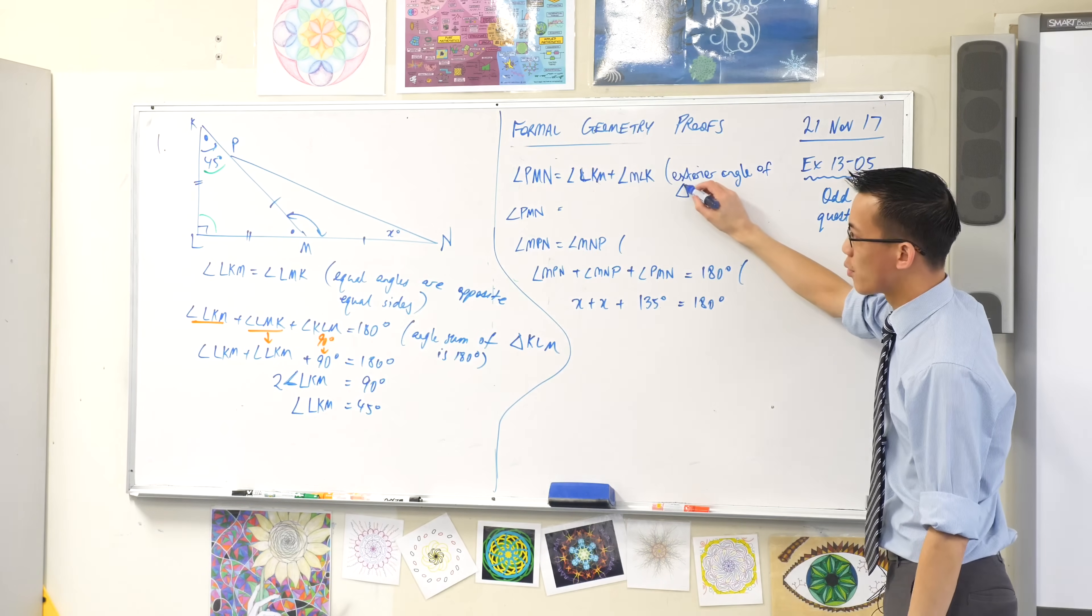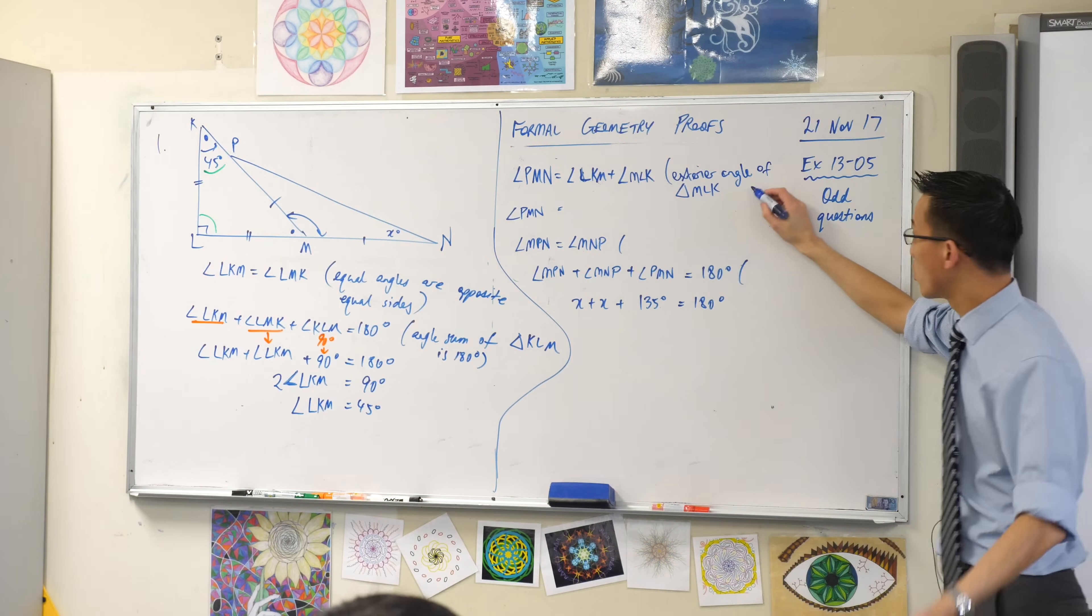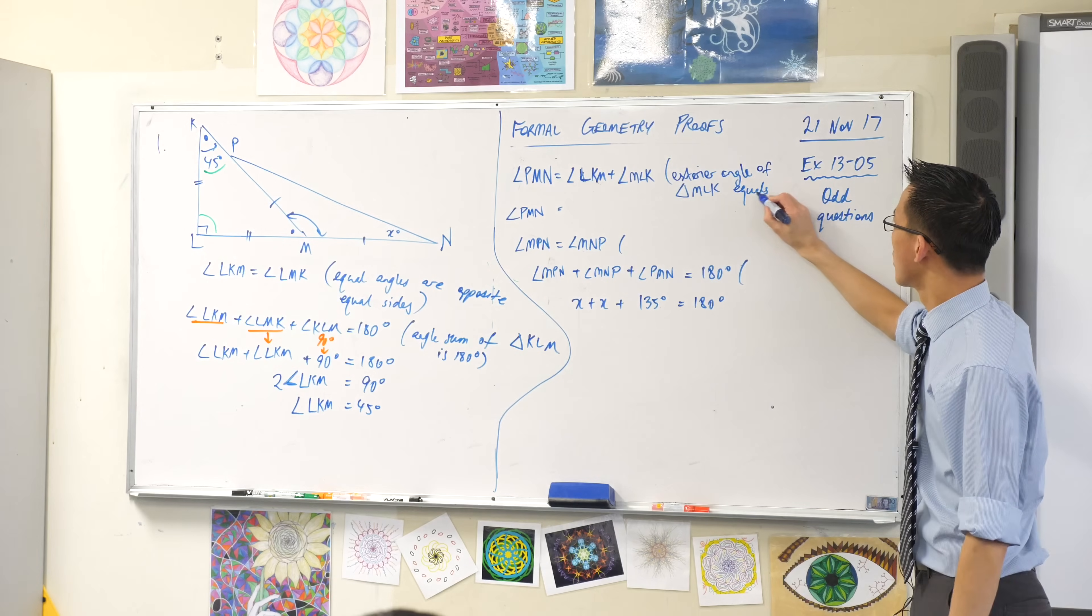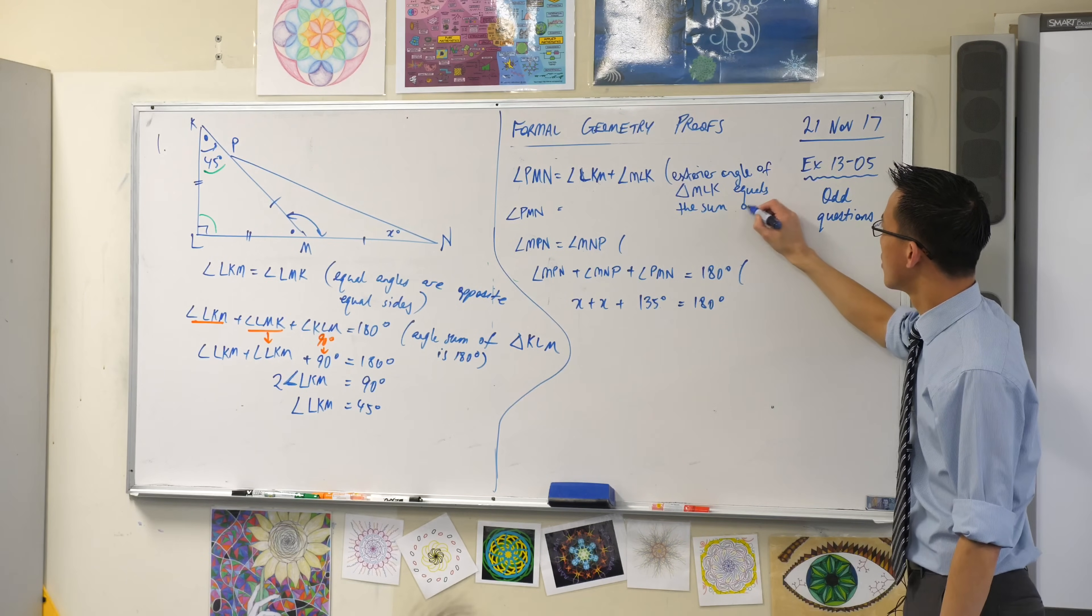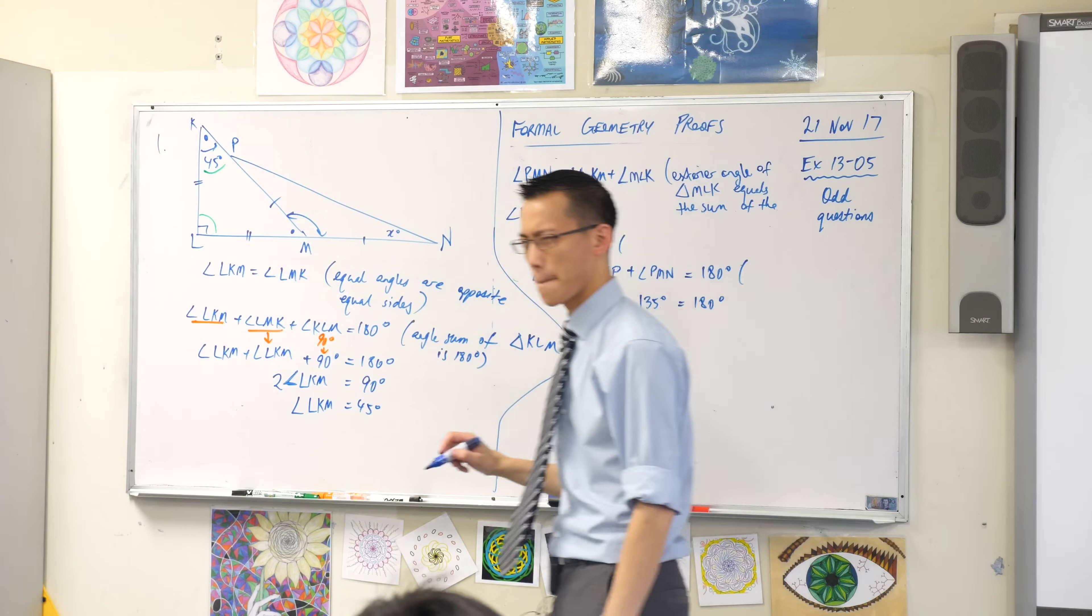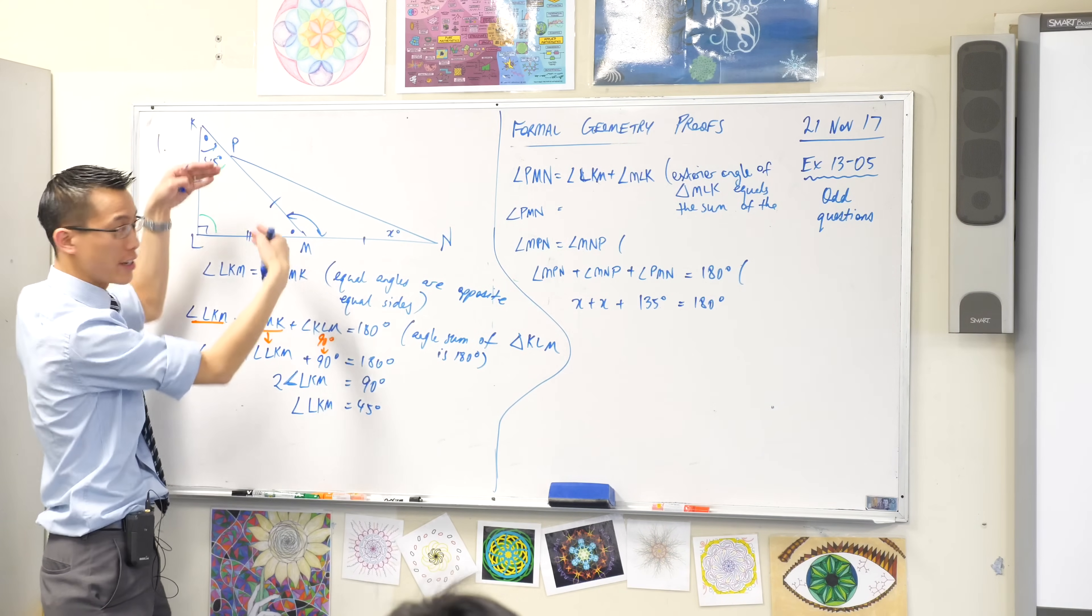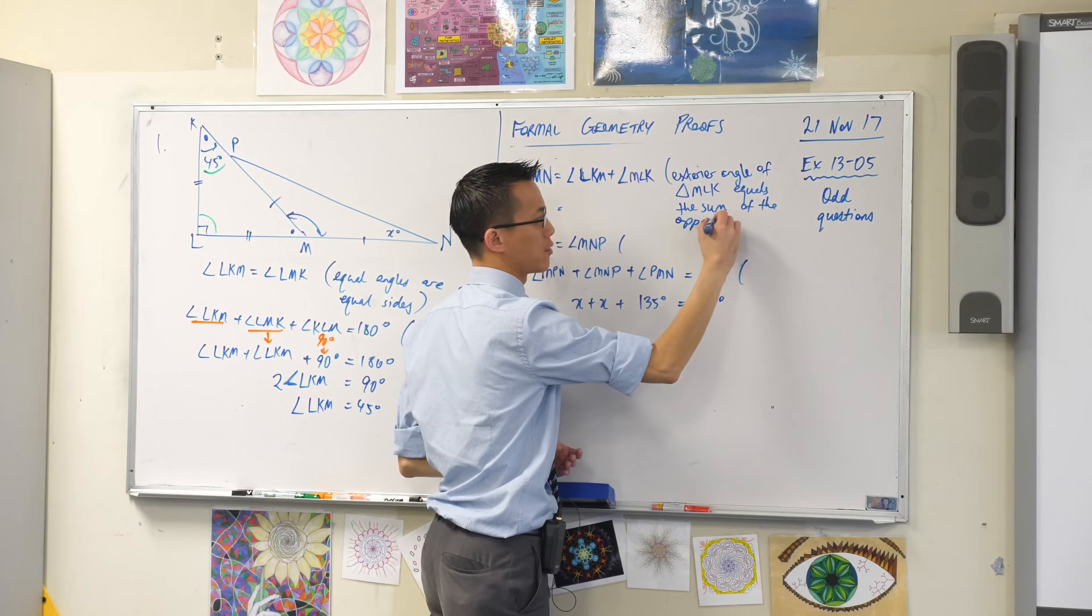The exterior angle of what's the triangle called? MLK equals the sum of the what? They are opposite and they are interior. So the opposite interior angles.